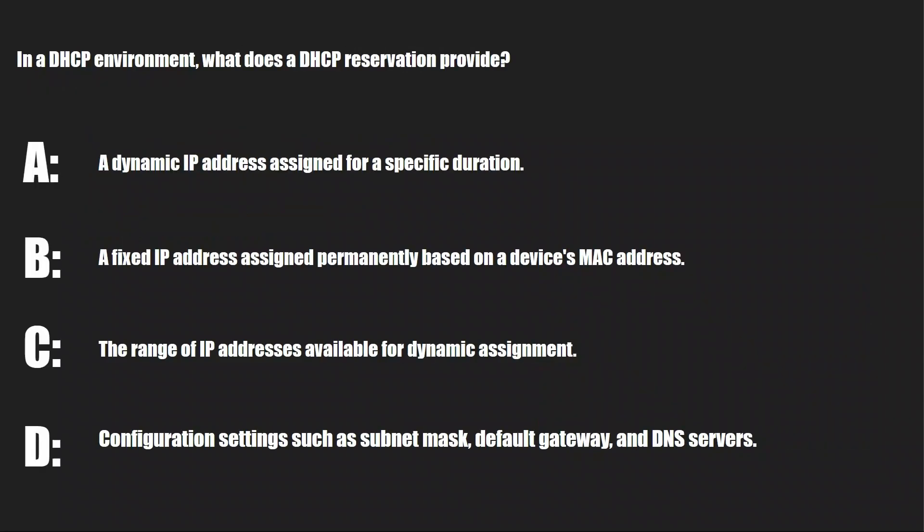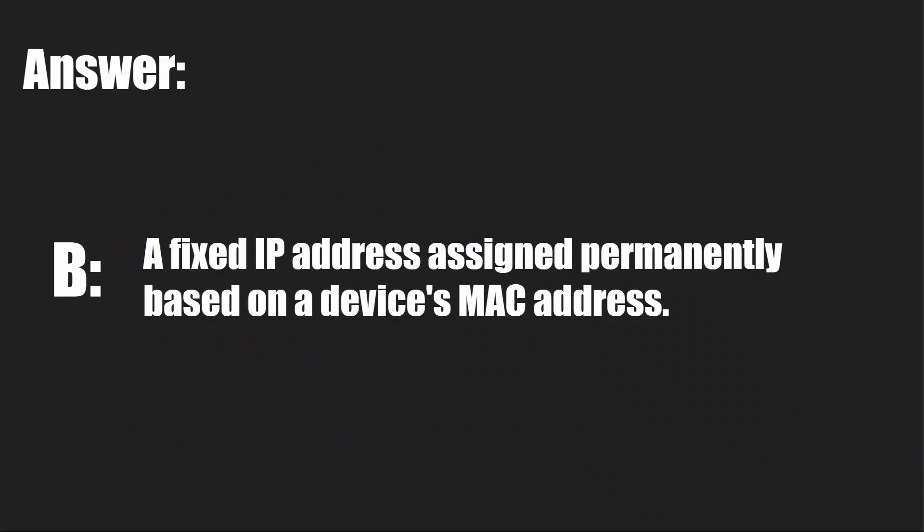Question three: In a DHCP environment, what does a DHCP reservation provide? A: A dynamic IP address assigned for a specific duration. B: A fixed IP address assigned permanently based on a device's MAC address. C: The range of IP addresses available for dynamic assignment. Or D: Configuration settings such as subnet mask, default gateway, and DNS servers.